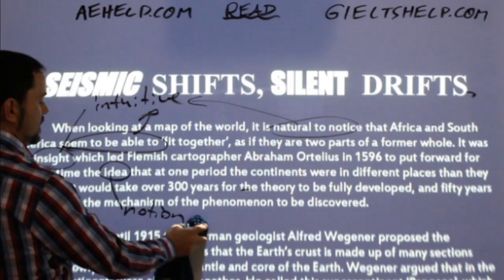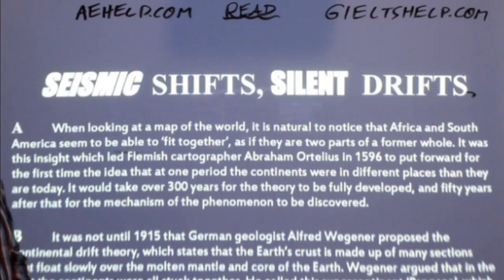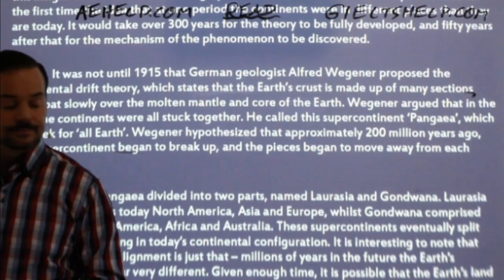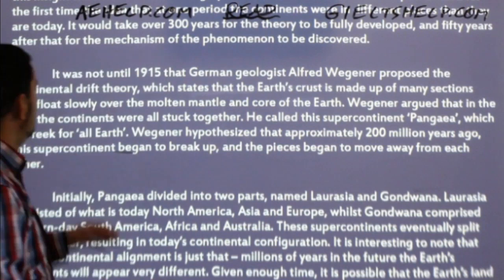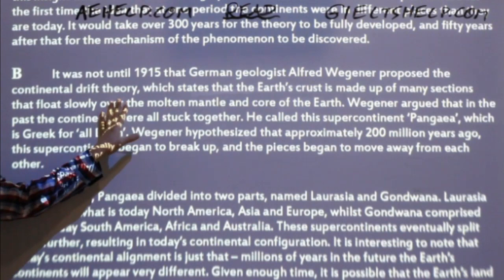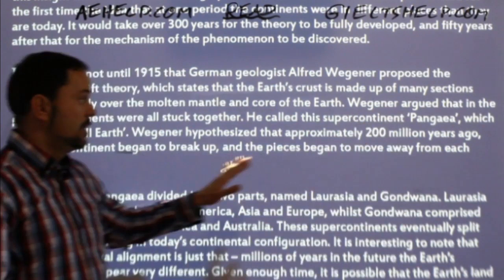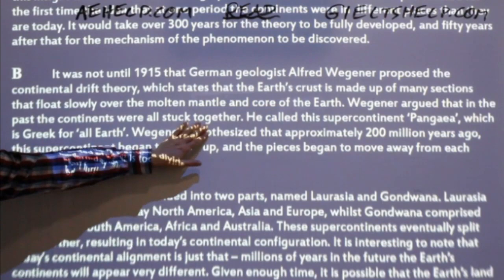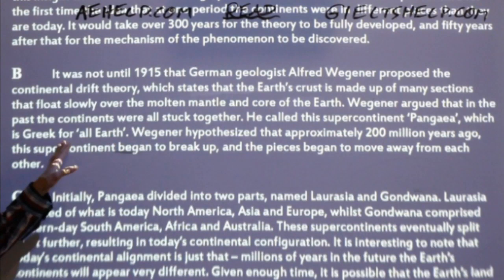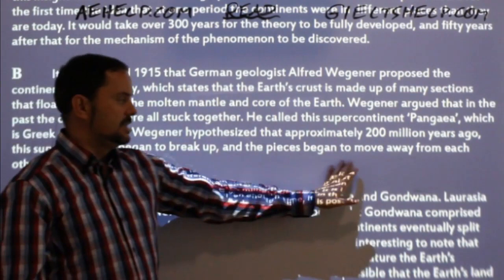Let's move to paragraph B. 'It was not until 1915 that German geologist Alfred Wegener proposed the continental drift theory, which states that the Earth's crust is made up of many sections that float slowly over the molten mantle and core of the Earth. Wegener argued that the continents were all stuck together — he called this supercontinent Pangea, which is Greek for 'all Earth.' Wegener hypothesized that approximately 200 million years ago, this supercontinent began to break up and the pieces began to move away from each other.'